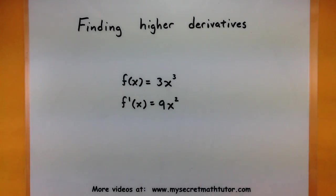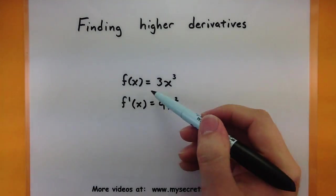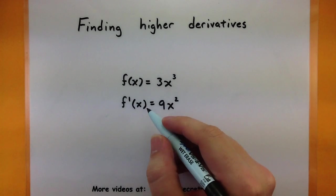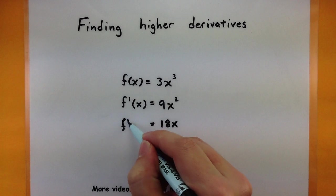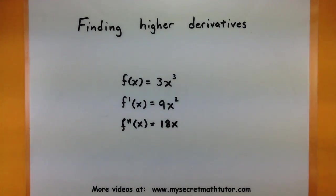After going through that process you notice you simply just get another function. So what's to stop you from taking a derivative of a derivative? And what we'll find is that there really is nothing stopping us. We can go ahead and take derivatives of derivatives. So let's pick up some notation you'll see as we're doing these higher derivatives.